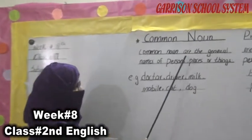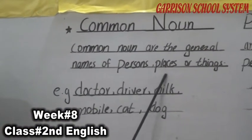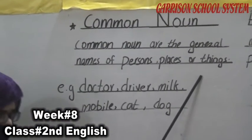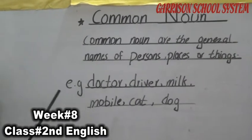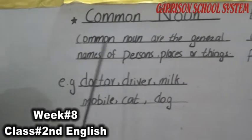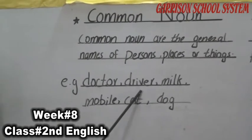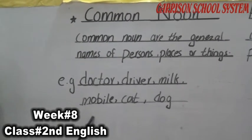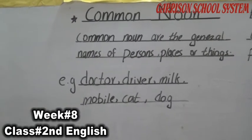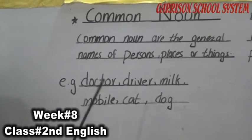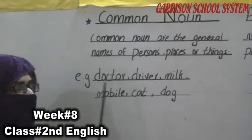Common nouns are the general names of persons, places, or things. It means that general names are called common nouns — like doctor, driver, milk, mobile, cat, and dog. These names are used as general names, meaning that a doctor is called a doctor.